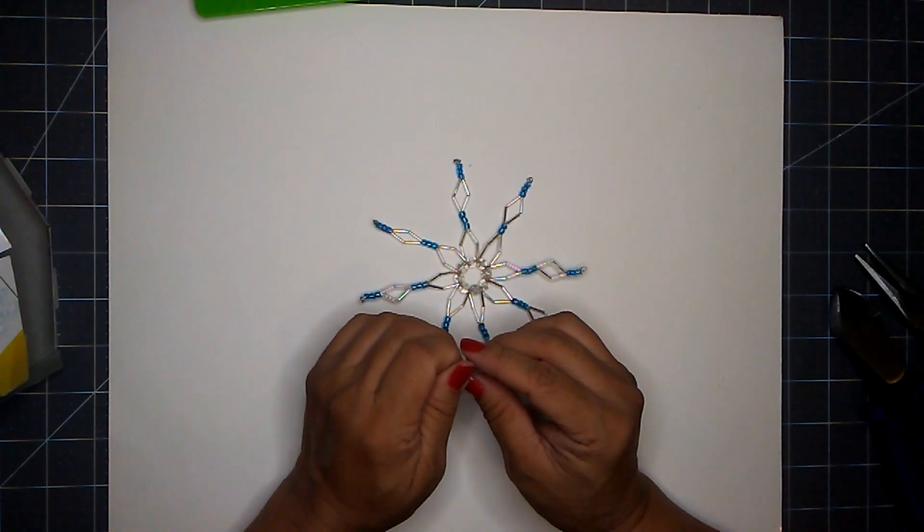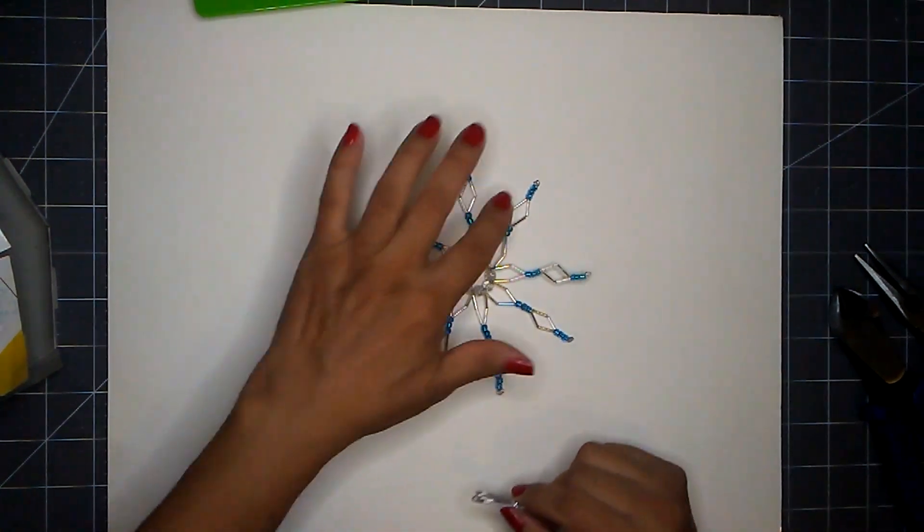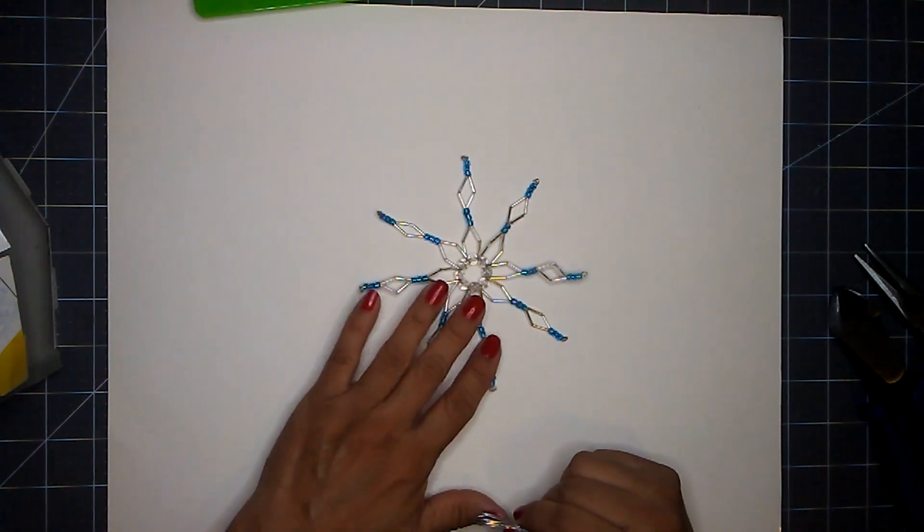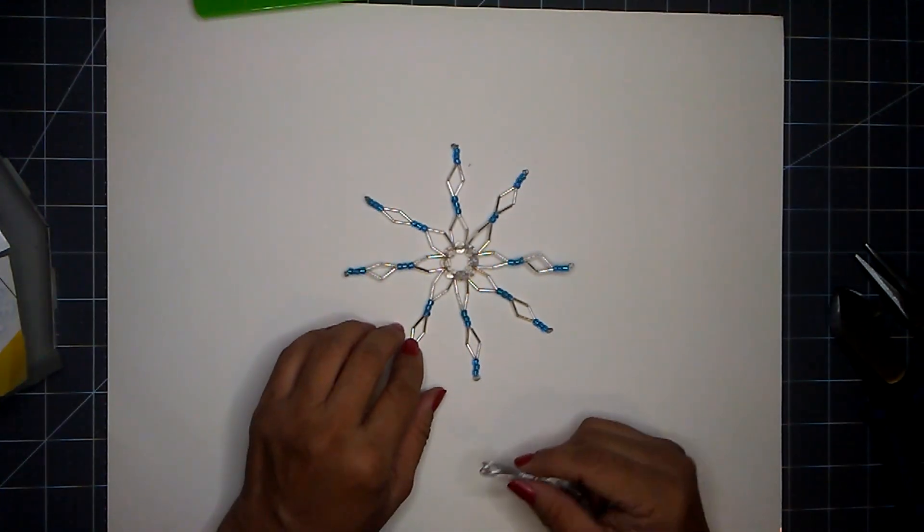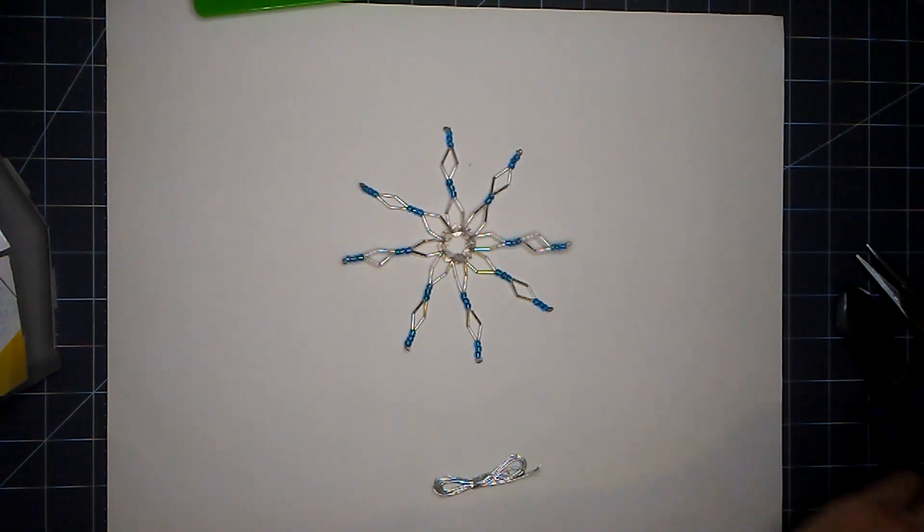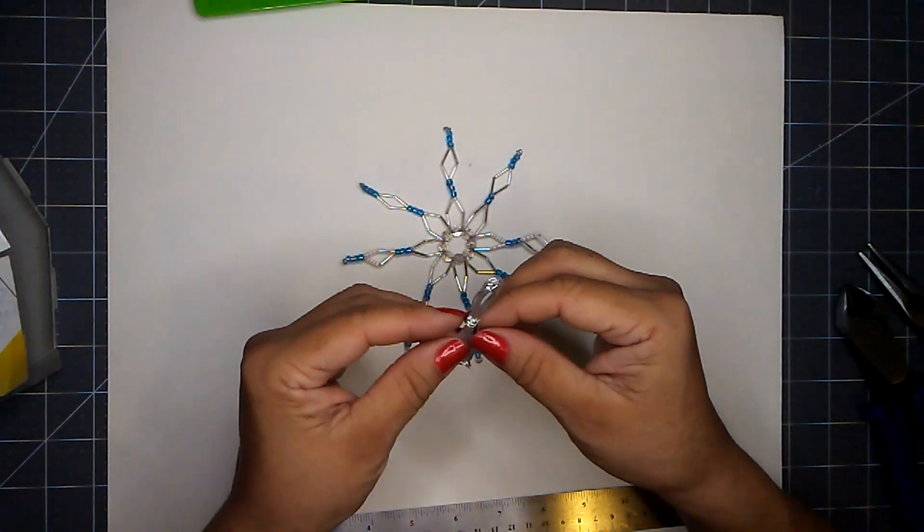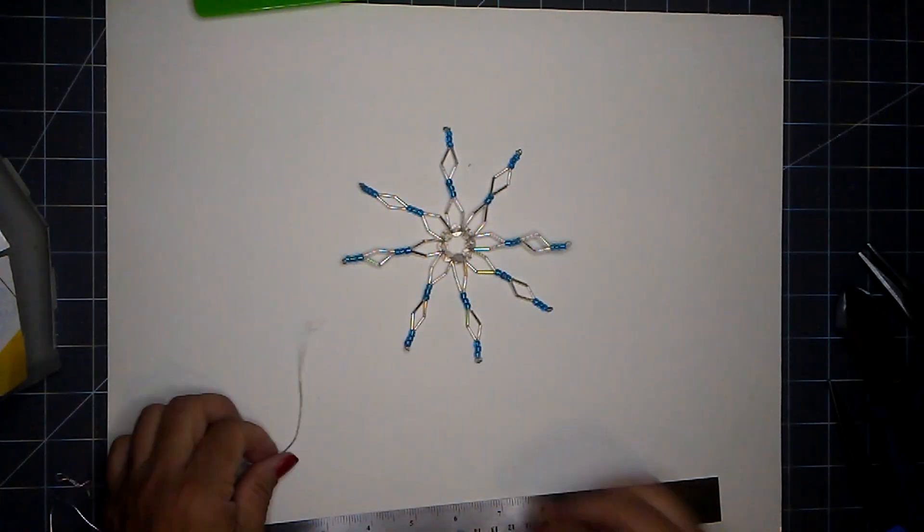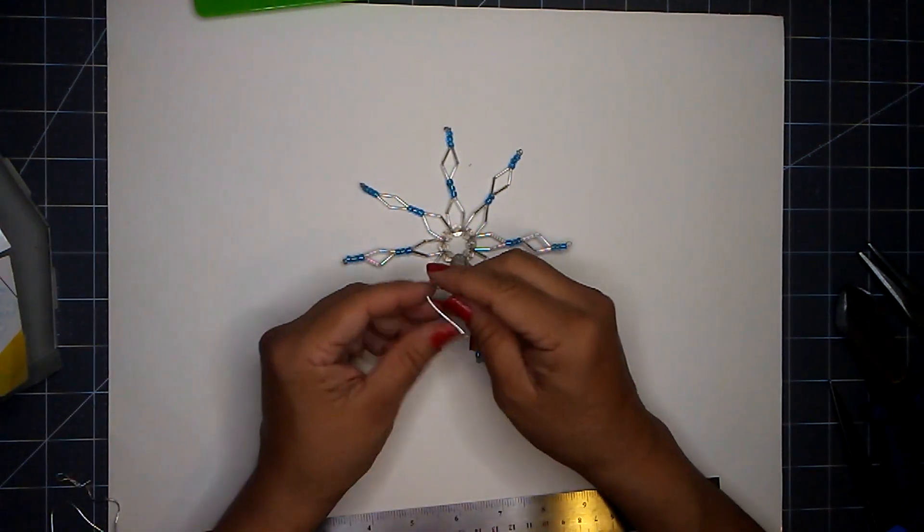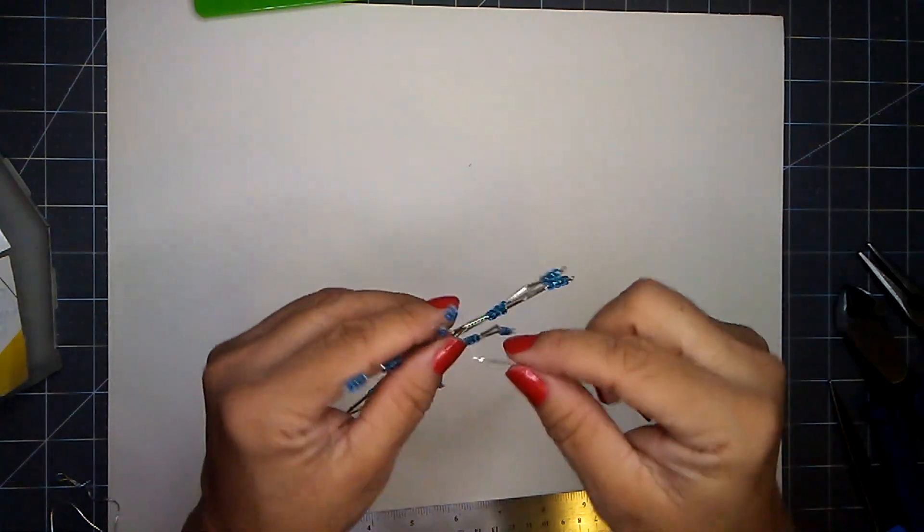Step five, it just says continue around alternating step three and four all the way around the snowflake. And then step six is cut a piece of elastic, six inch piece is what we need. So let me get my elastic here. And then you want to tie it on one of the knots on your snowflake. So just pick any one.